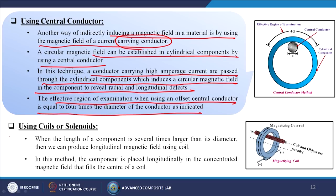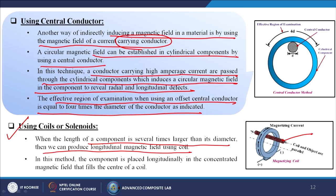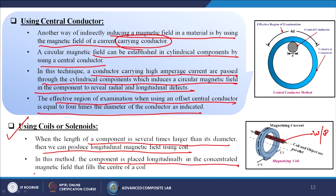The next method uses coils or solenoids. When the length of a component is several times larger than its diameter, we can produce a longitudinal magnetic field using a coil. For example, if we have a long pipe — whether solid or hollow — we use this approach. In this method, the component is placed longitudinally in the concentrated magnetic field that fills the center of a coil.